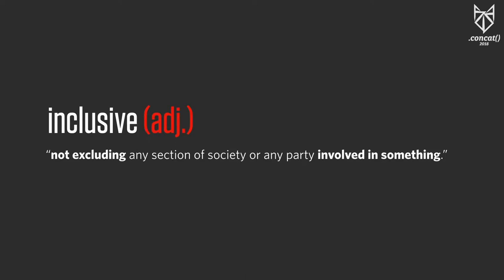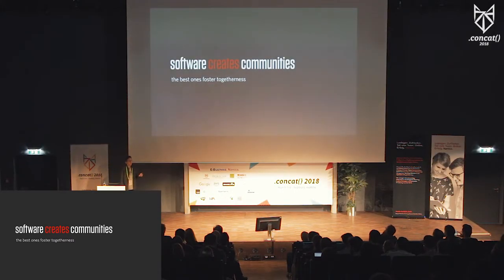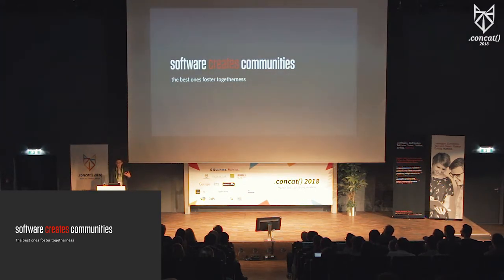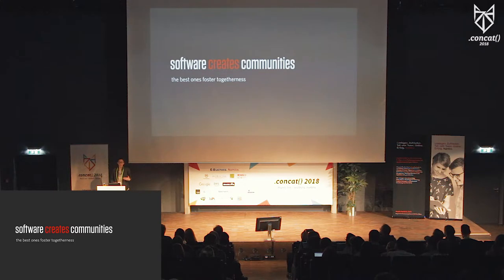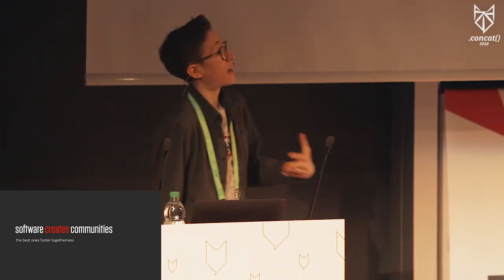The dictionary definition for inclusive is an oppositional one — it means to not exclude people. It's a bit vague, but the "involved in something" part is important as well. And when we think about code, we don't always think about things like communities. But a community is just common ownership and shared interest. It's being involved in something. This isn't just about design and development, but about us as creators of things and our users, the people for whom we create.